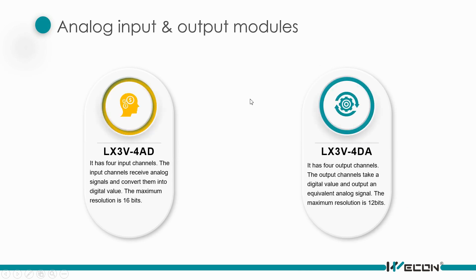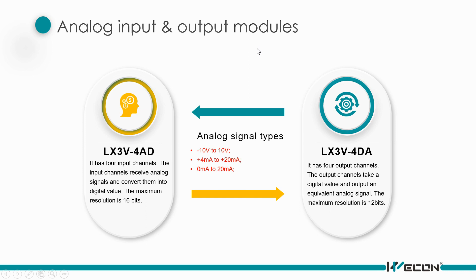Here are the analog input and output modules — AD and DA. They can support voltage signal or current signal. The voltage signal ranges from -10V to 10V, and the current signal ranges from 4mA to 20mA, or 0 to 20mA.